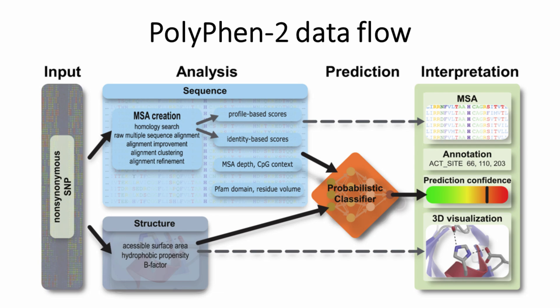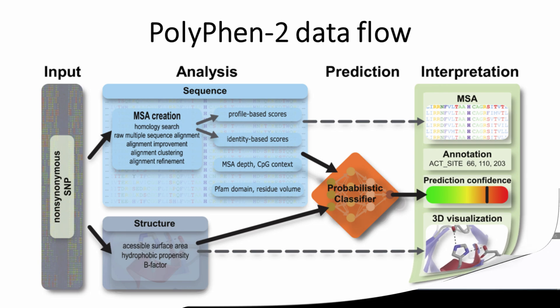The alignment pipeline selects the set of homologous sequences for the analysis using a clustering algorithm, and then constructs and refines their multiple alignment. The functional significance of an allele replacement is predicted from its individual features by a naive Bayes classifier.